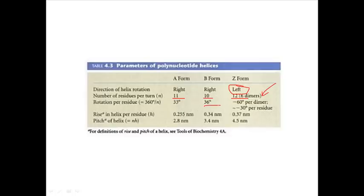If you look at the rotation per residue, in case of B-DNA found 36 degrees to make a spiral. All these DNAs are different spirals. In A-DNA this is slightly slower at 33 degrees, but in case of Z form it is minus 60 degrees per dimer, or minus 30 degrees per dimer, which gives us the idea about the zigzag nature of this Z form of DNA.